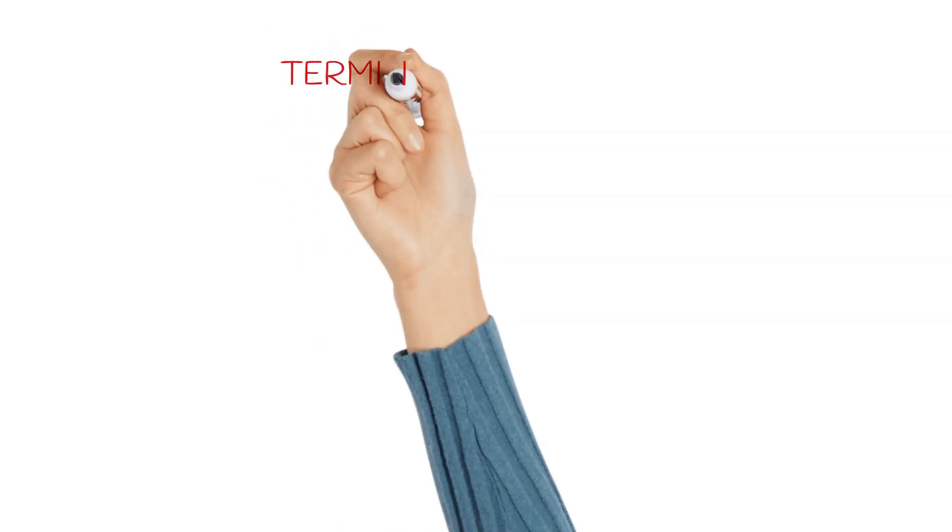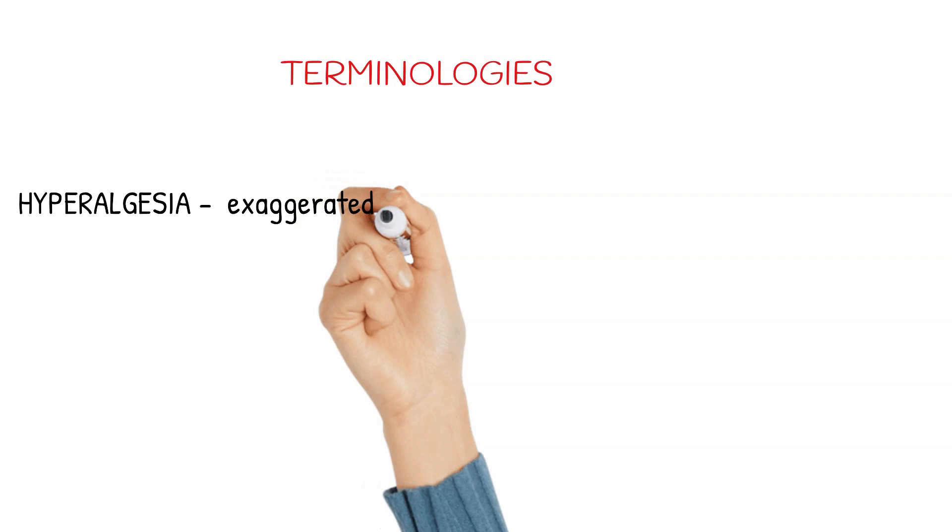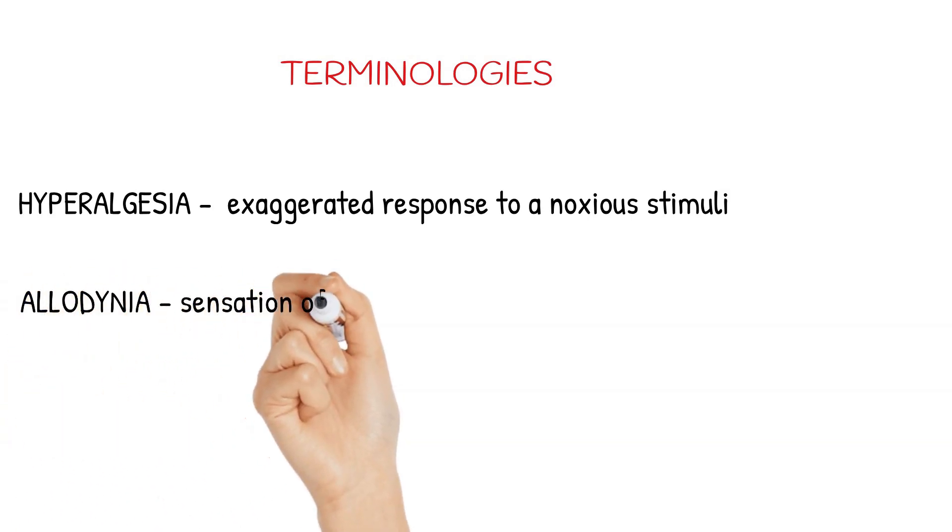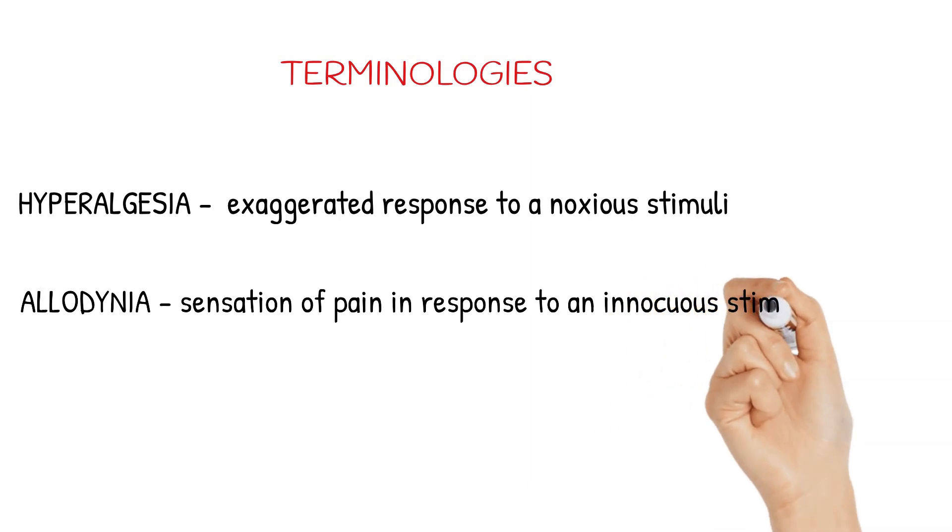So let's get familiar with certain terminologies like hyperalgesia and allodynia. Hyperalgesia is an exaggerated response to a noxious stimuli. And allodynia is sensation of pain in response to an innocuous stimuli or a non-noxious stimuli.